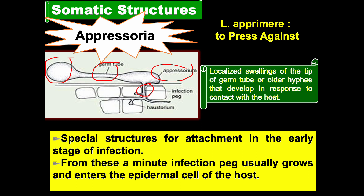From the appressorium, a minute infection peg usually grows and enters the epidermal cell of the host. The appressorium is essentially a lobed structure of the hypha or germ tube, functioning as an anchoring organ from which the infection peg grows. The appressorium always helps the germ tube to attach to the surface of the host or substratum. These appressoria are formed from germ tubes of Uredinia that cause rust fungi, and Aeciospores that cause Peronosporales and other fungi in their parasitic or saprophytic stages.